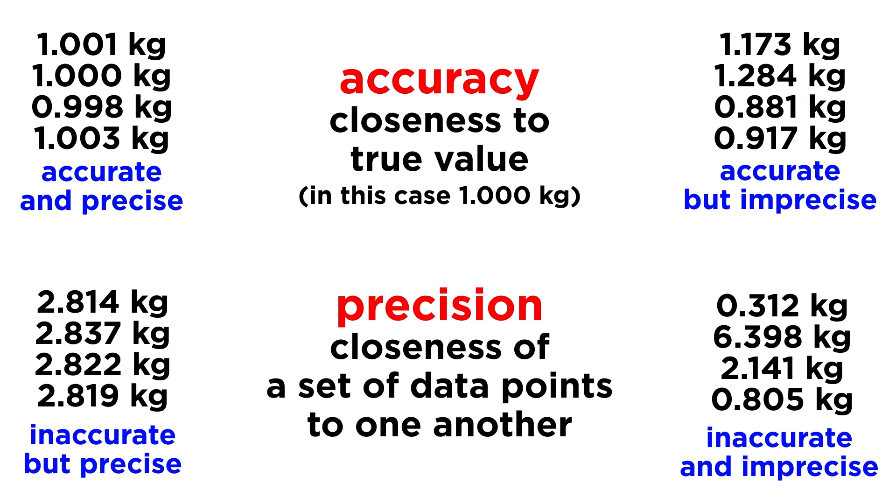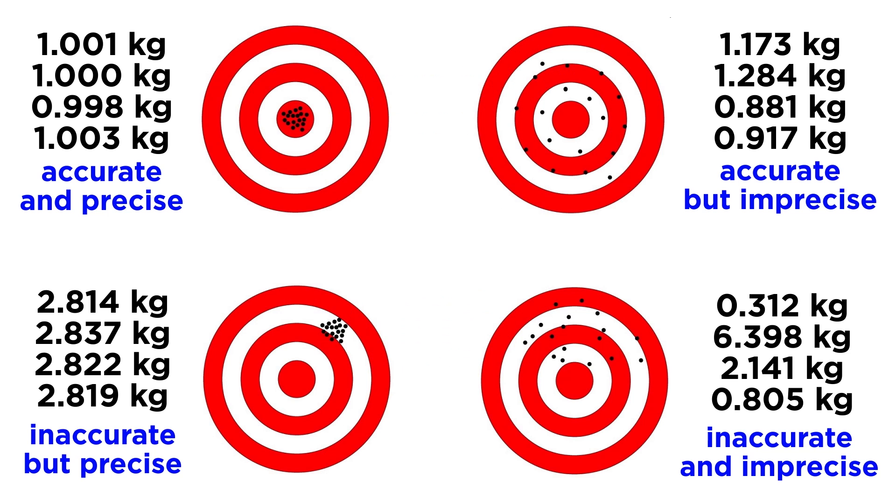Once again, these qualities depend on how close they are to the true value and how close they are to each other. We can use target practice as an analogy. If we regard the bullseye as the true value, we can see how the following results represent the different types of data sets we just discussed. Accuracy will mean that a data point is close to the bullseye, and precision will mean that data points are close to each other.